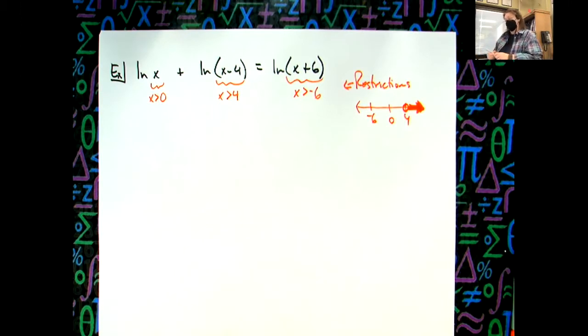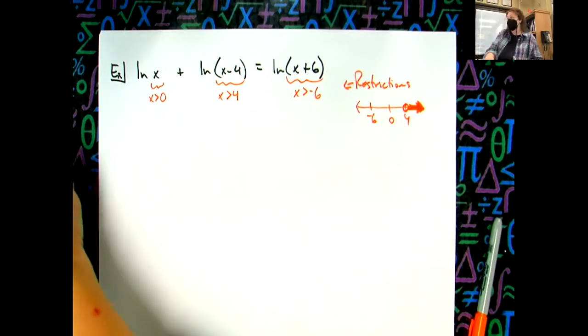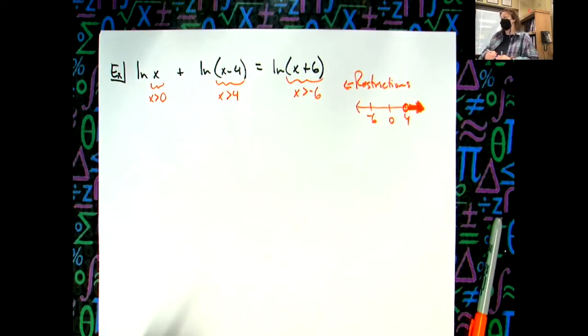Alright, so what's the first log property that you see that we could do? We compress logs, we don't want to expand because we're trying to get this as simple as possible. Is there some compression that I can do somewhere? Sam, where's my compression?